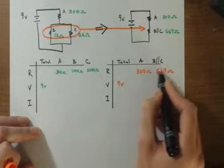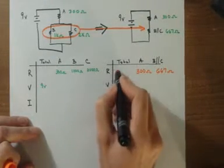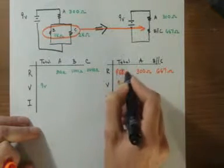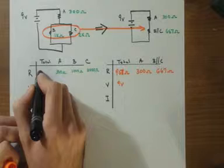But now that I have a series circuit, I can simply add up the two resistors to get a total resistance of 967 ohms, and I can copy that back to this table.